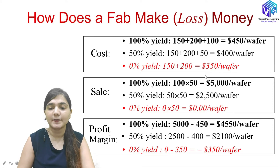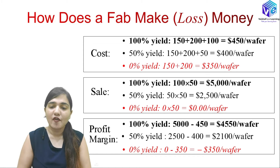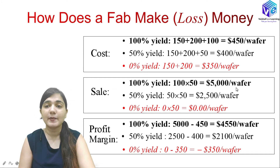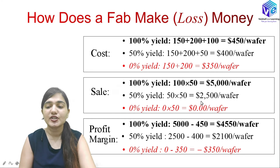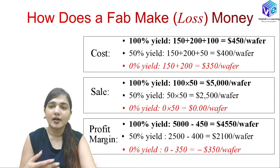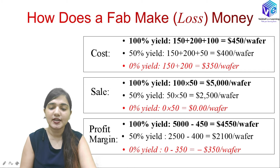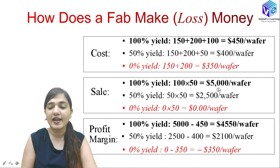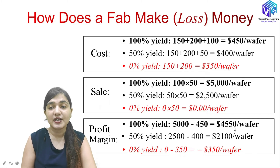For sales: at 100% yield, 100 chips at $50 each gives $5,000 per wafer. At 50% yield, 50 chips at $50 gives $2,500 per wafer. At zero yield, no chips to sell means zero revenue. For profit at 100% yield: $5,000 minus $450 cost gives a profit of $4,550 per wafer.